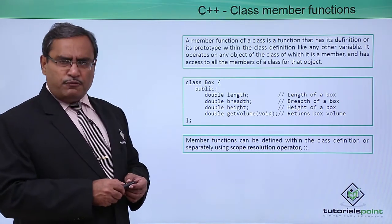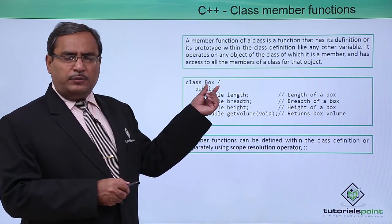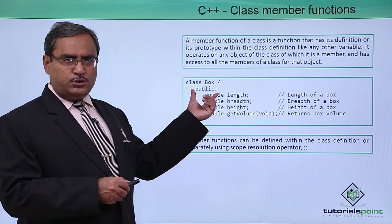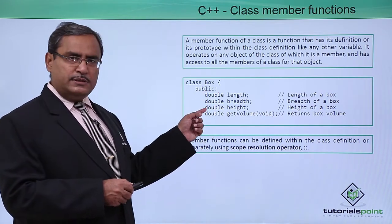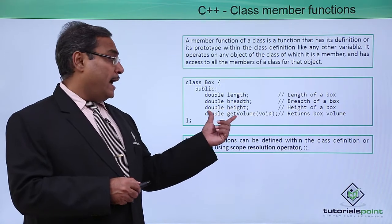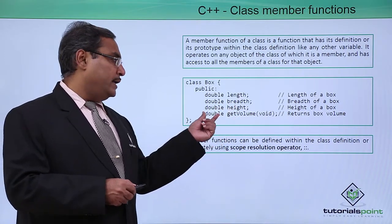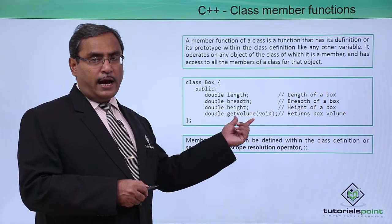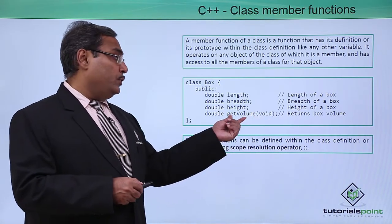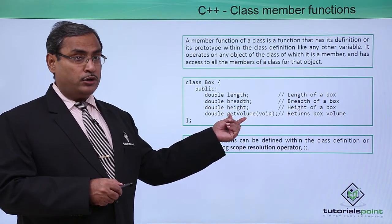Let us go through one example. Here is a class; the name of the class is box. Under the public scope, we define three variables: double length, double breadth, double height. We also have a member function double get_volume which takes nothing as an input argument. We know how to calculate the volume of a respective box.